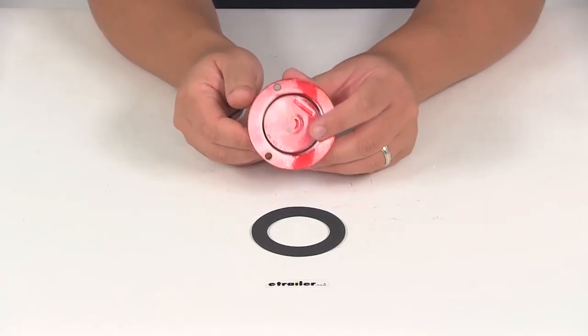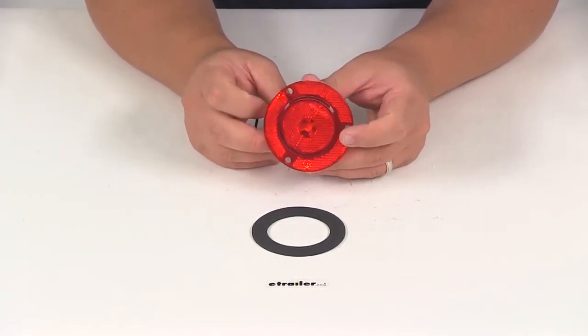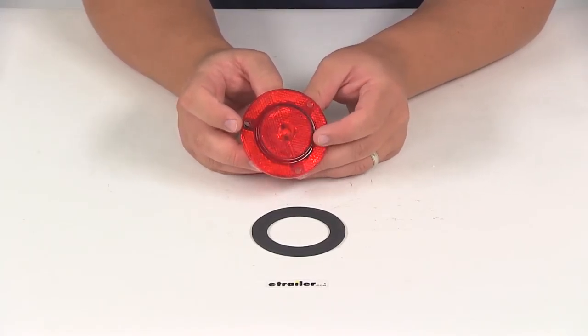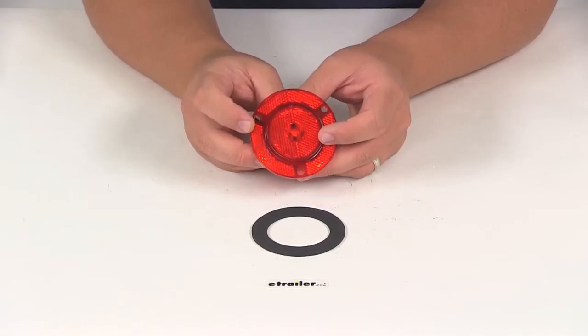This light contains seven LEDs. The power draw at 12.8 volts is 0.063 amps, and Optronics provides a lifetime warranty on the LEDs.